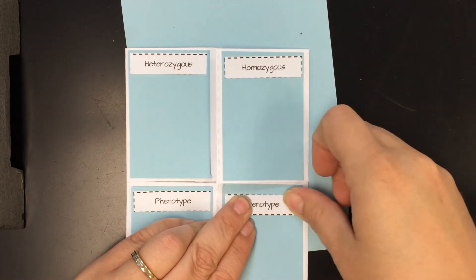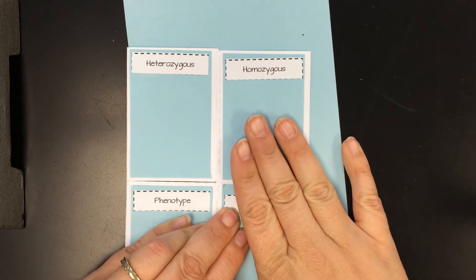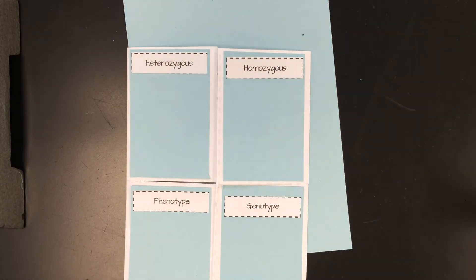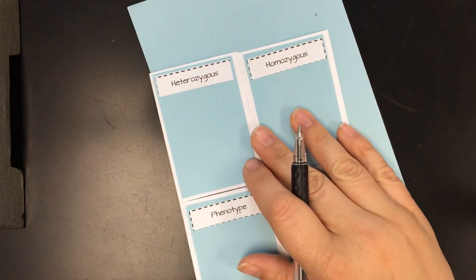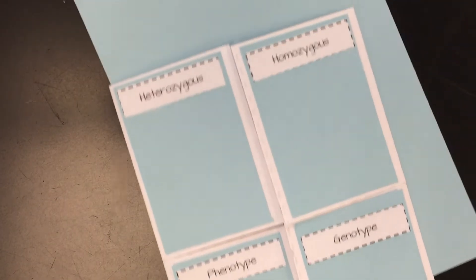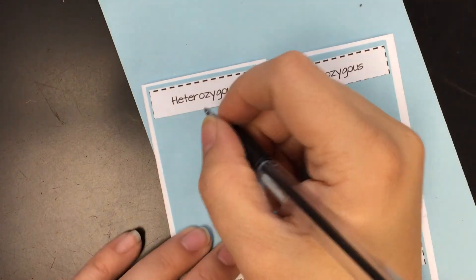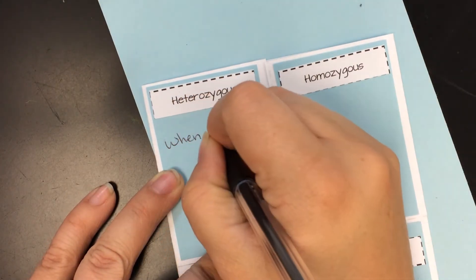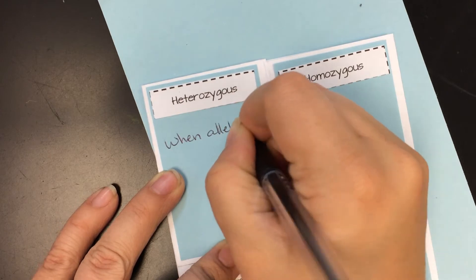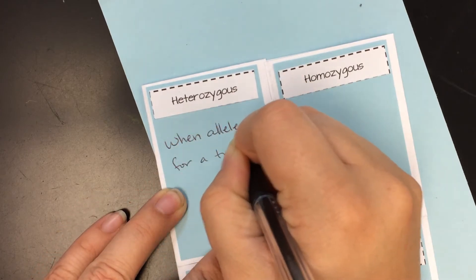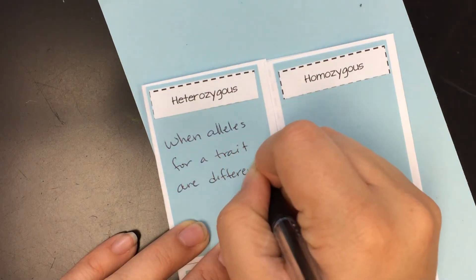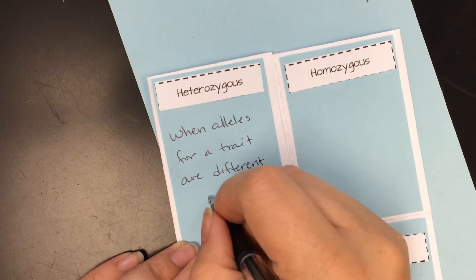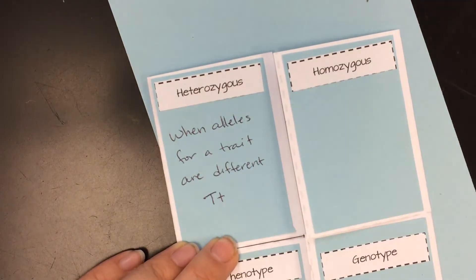So you need to put the definitions on here. You can go and use the definitions off your vocabulary cards or you can put it in your own words. So I'm going to put it in my own words right now and you are welcome to use my own words if you prefer. So for the first one, heterozygous. Heterozygous is when the alleles for a trait are different. So that's like saying if we have big T, little t for my trait.